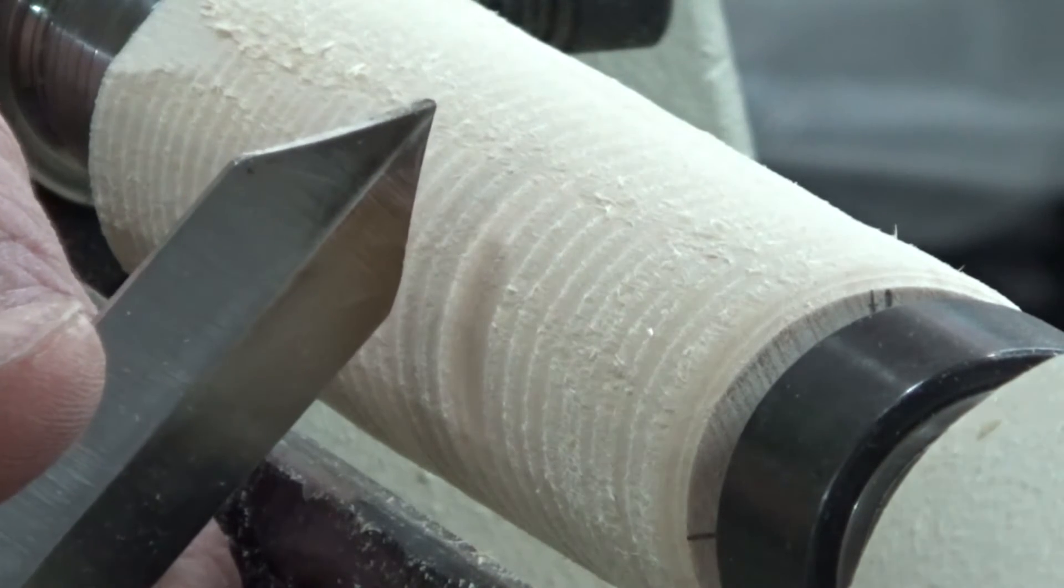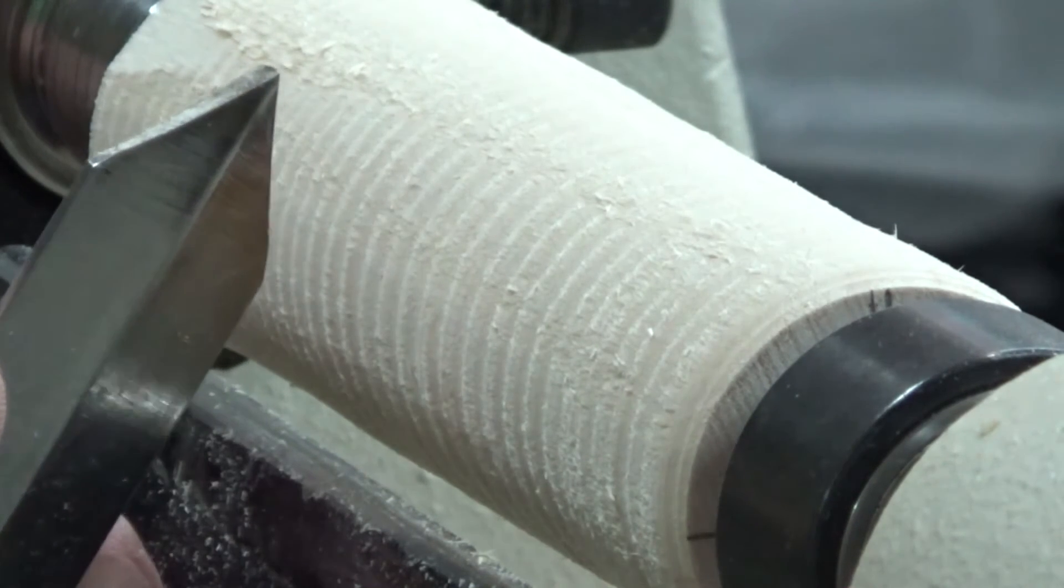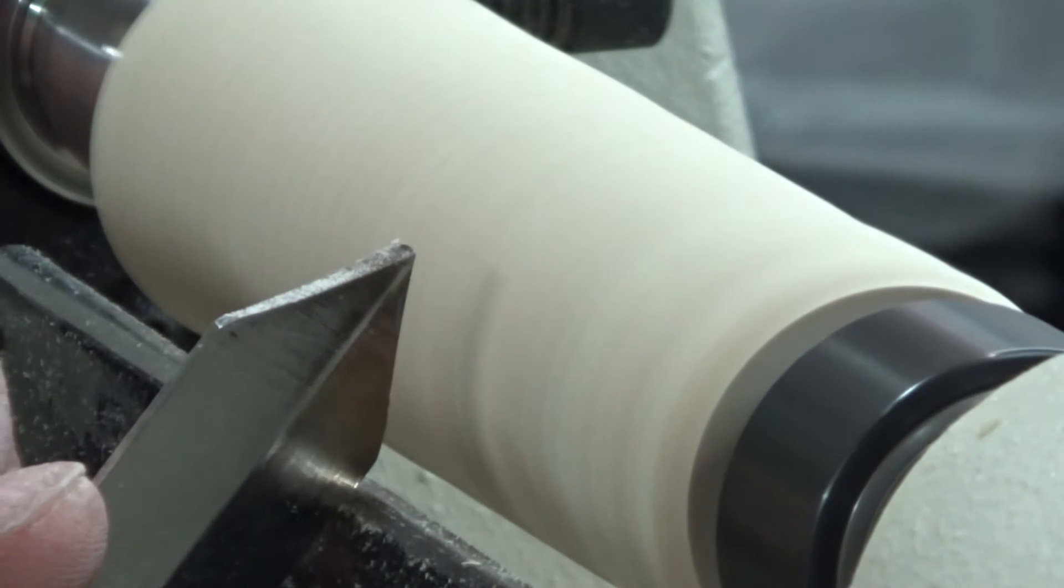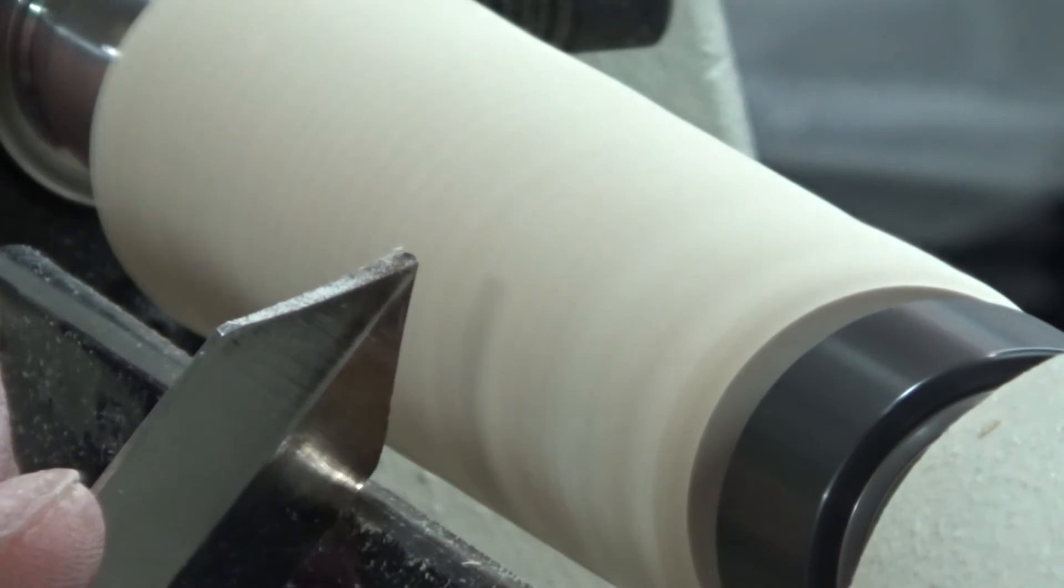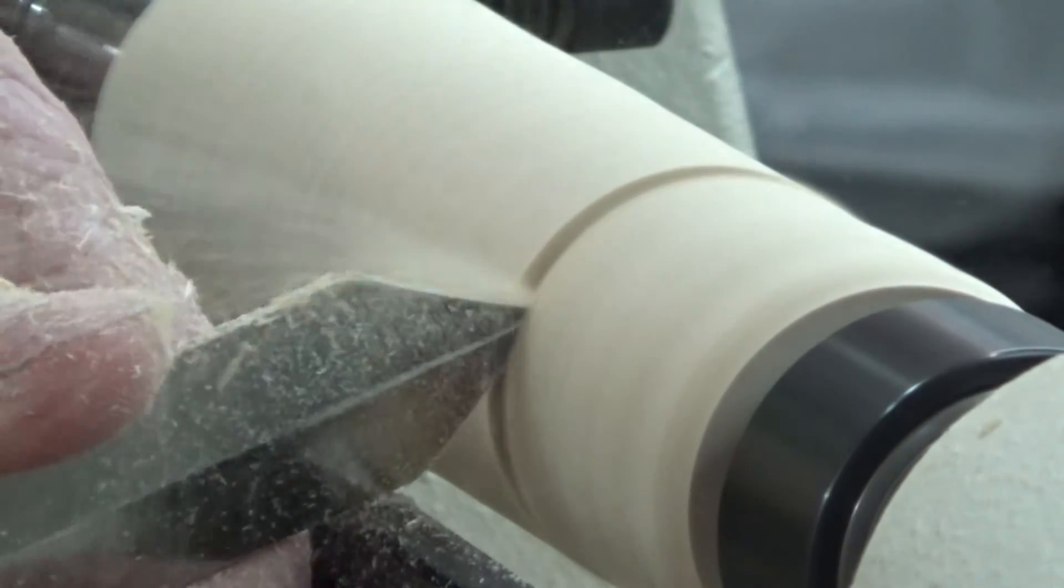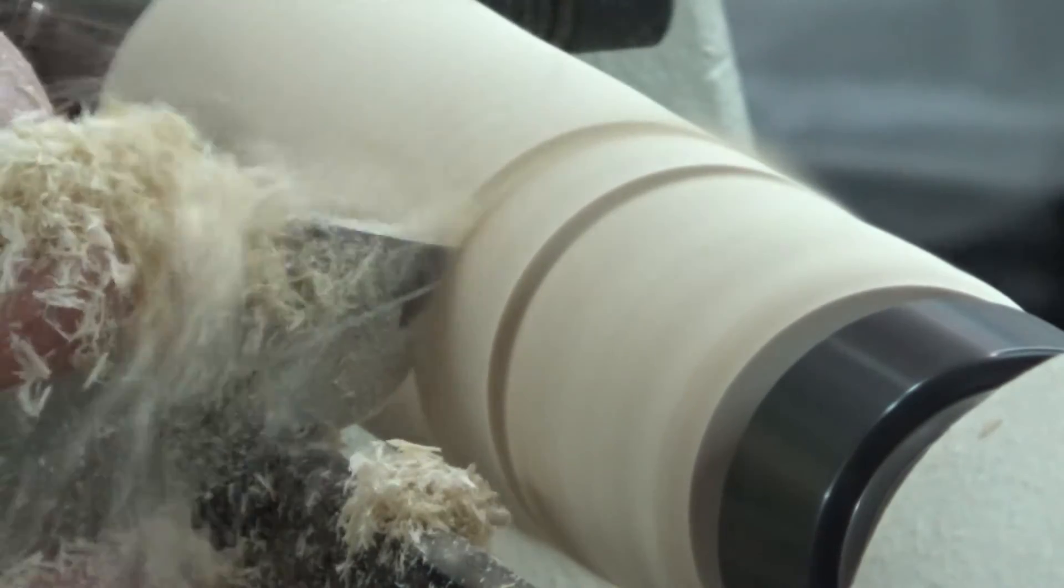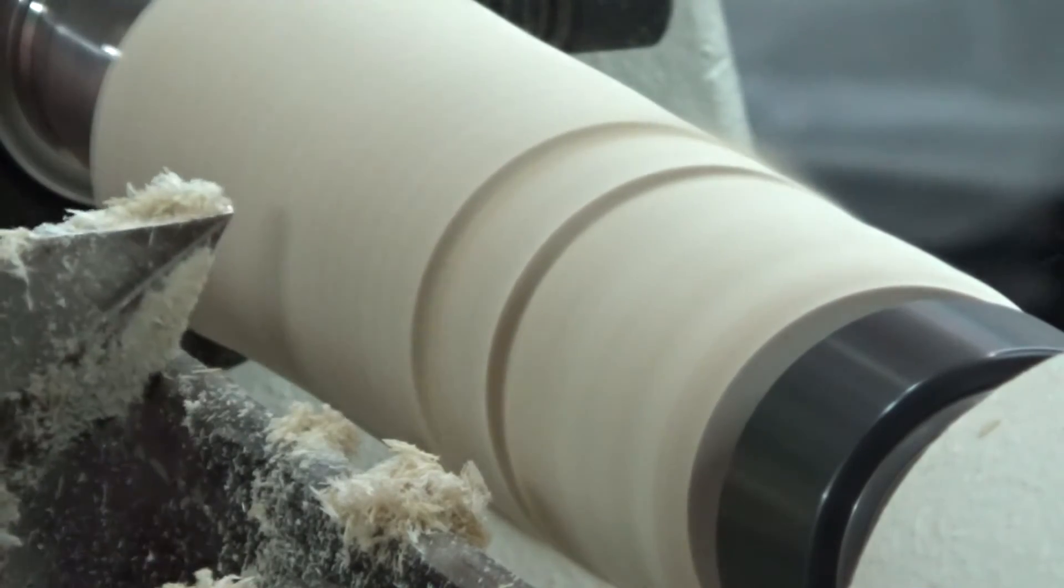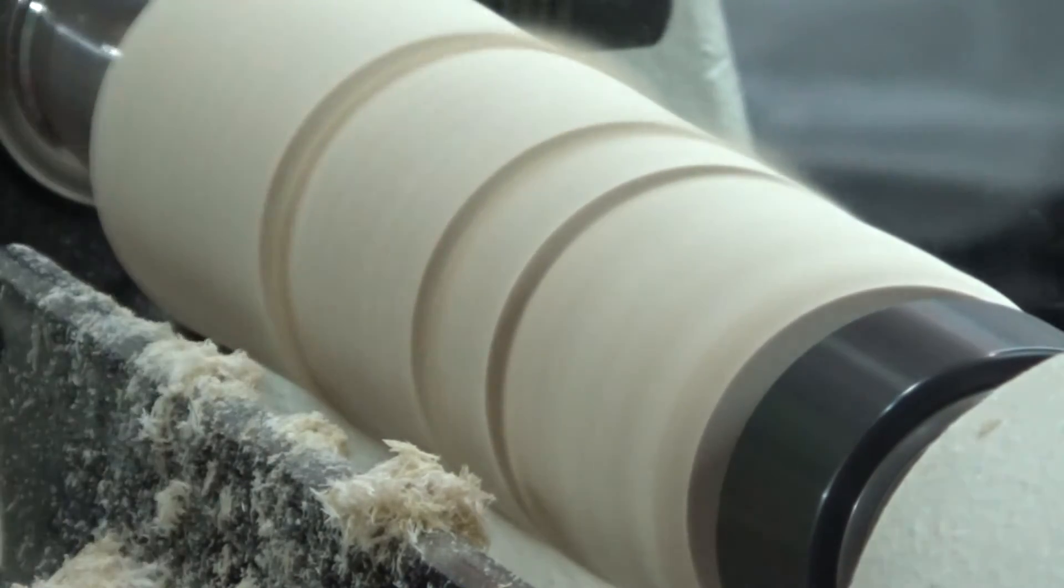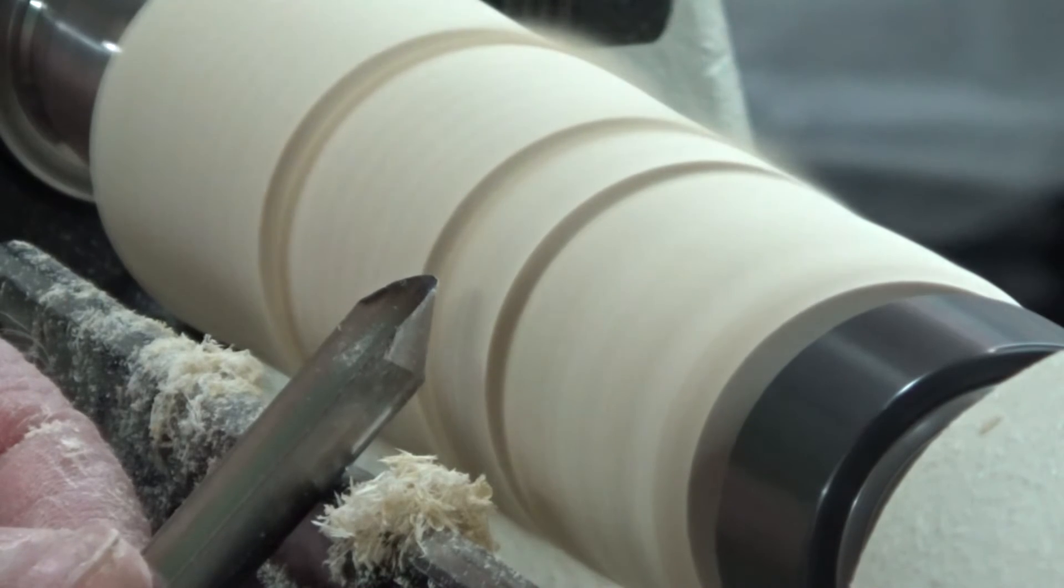Still another use would be to help us make convex or concave cuts into a piece of wood, commonly known as beads and coves. It's much easier to finish a cut going into the air than it is to go into wood. So we use the parting tool to create some space. Now we have room, at the end of the cut, for a spindle gouge to easily make the beads and coves.